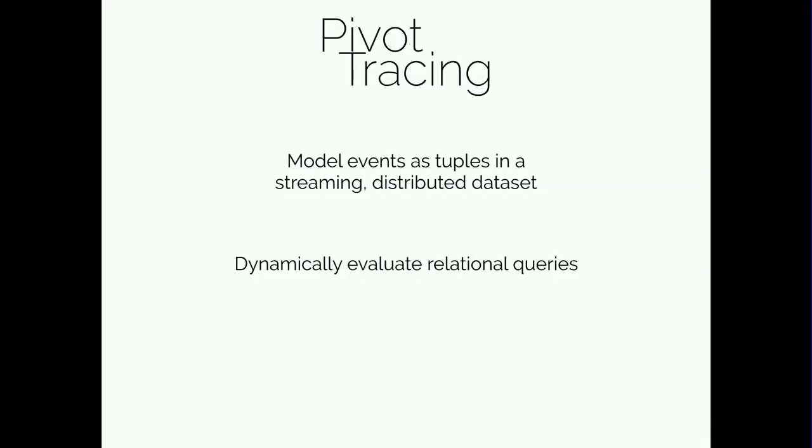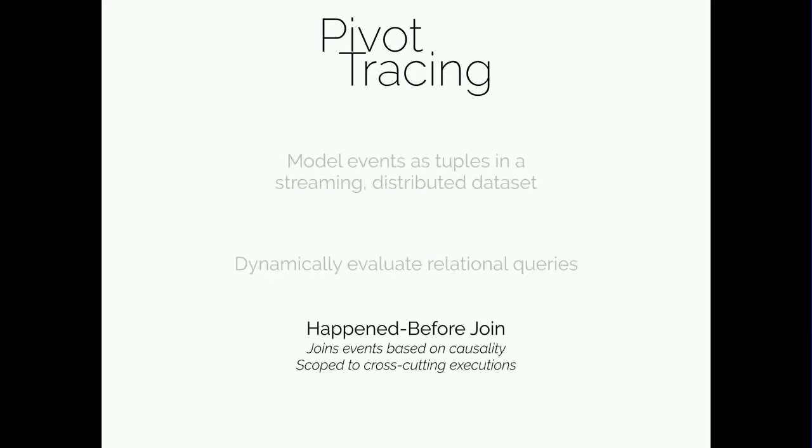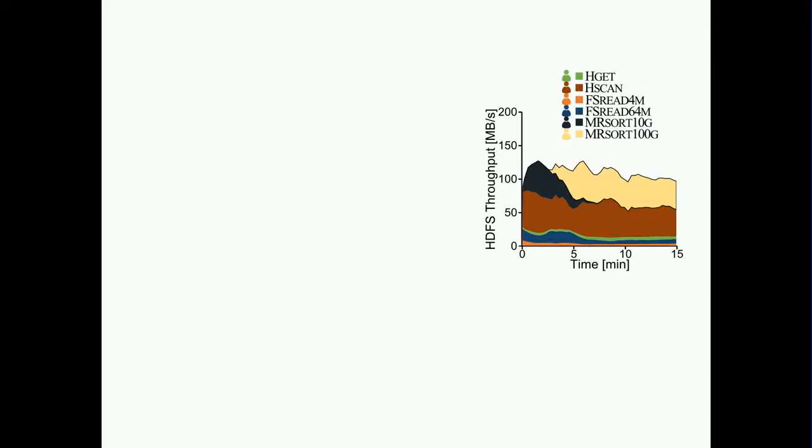Key to Pivot Tracing is the ability to correlate across component boundaries. To do this, we introduce a query operator called the happen-before join, based on Lamport's happen-before relation. With it, we can join tuples that occur anywhere in the same execution from any component. A query can essentially group and filter by properties in one part of the execution, while summing up or aggregating properties from elsewhere.